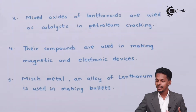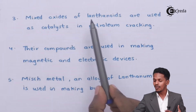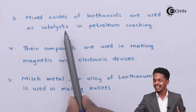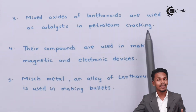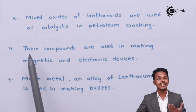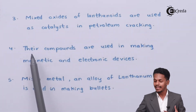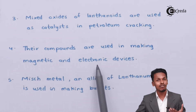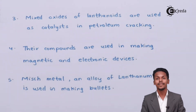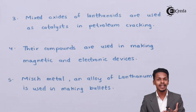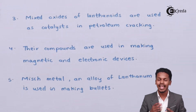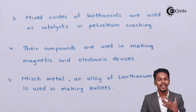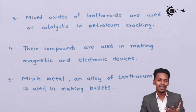Mixed oxides of lanthanoids are used as catalysts in petroleum cracking. Their compounds are also used in making magnetic as well as electronic devices, because most of their compounds are paramagnetic and ferromagnetic in nature, and that's the reason many magnetic and electronic devices can be made from those compounds.